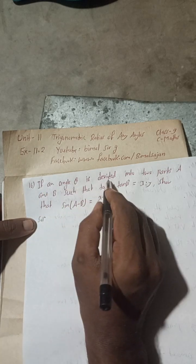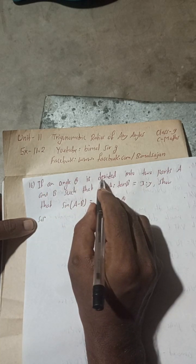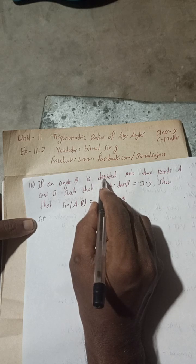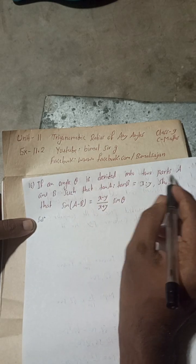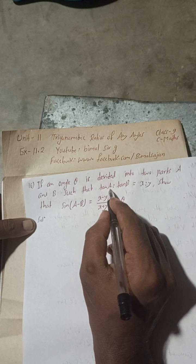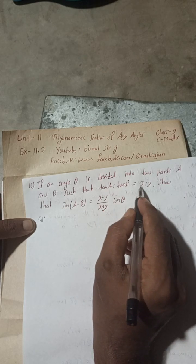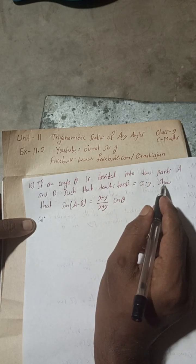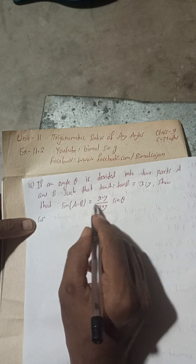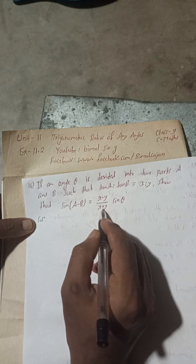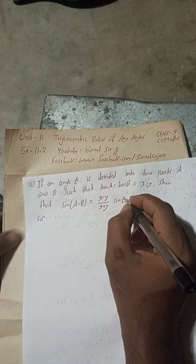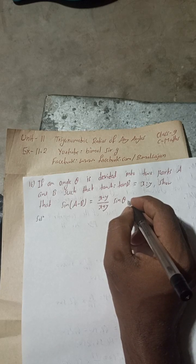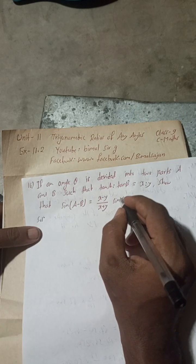If an angle theta is divided - the spelling in the book is mistake, this is D-I-V-I-D divided - into two parts A and B such that tan A is to tan B is equal to X is to Y, so that sin(A-B) is equal to (X-Y)/(X+Y) sin theta. This is the question. Now let's begin this solution.